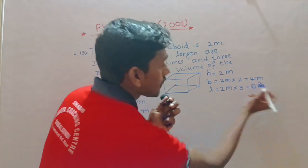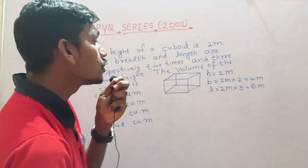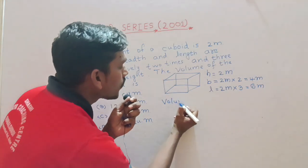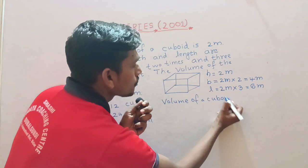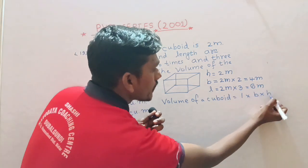The volume of a cuboid - to find volume of a cuboid, the formula: volume of a cuboid is length into breadth into height.